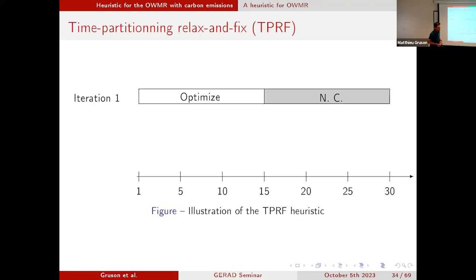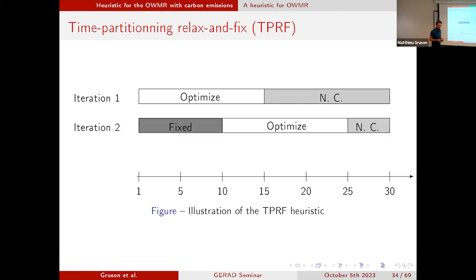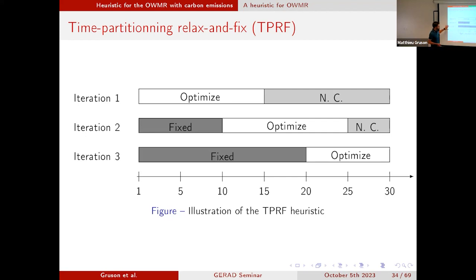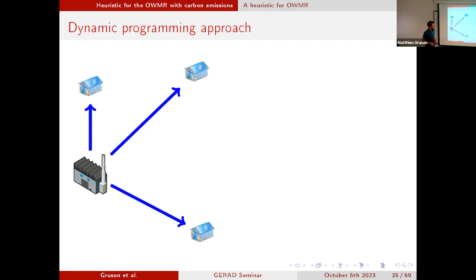For the time partitioning relax-and-fix approach, the idea is to do different iterations considering just a subset of the time periods and optimizing the setup decisions on that subset. In the first part I optimize my setup decisions; the rest is not considered. Then I move to the second iteration, where some decisions are fixed and another part is optimized. I do iterations until I reach the end of the time horizon. This gives me a retailer replenishment and setup plan.